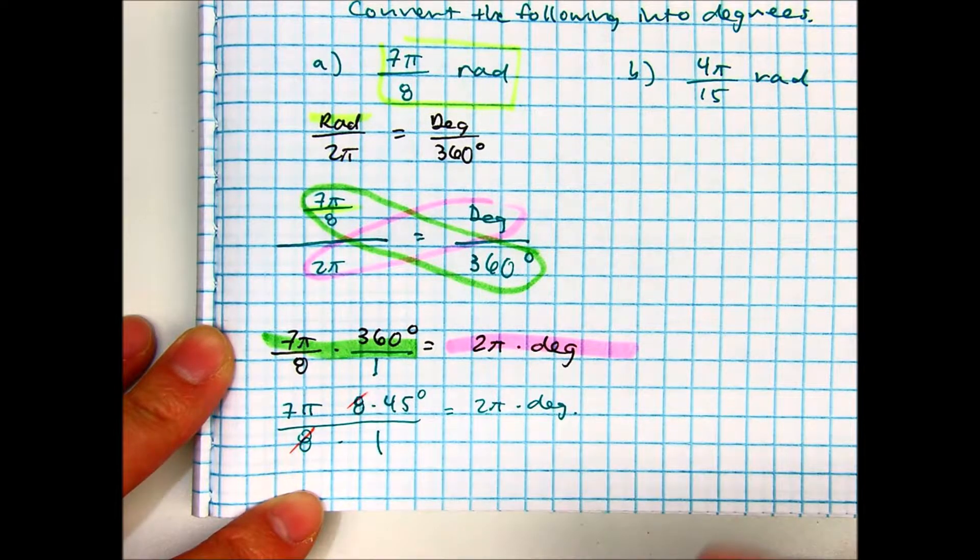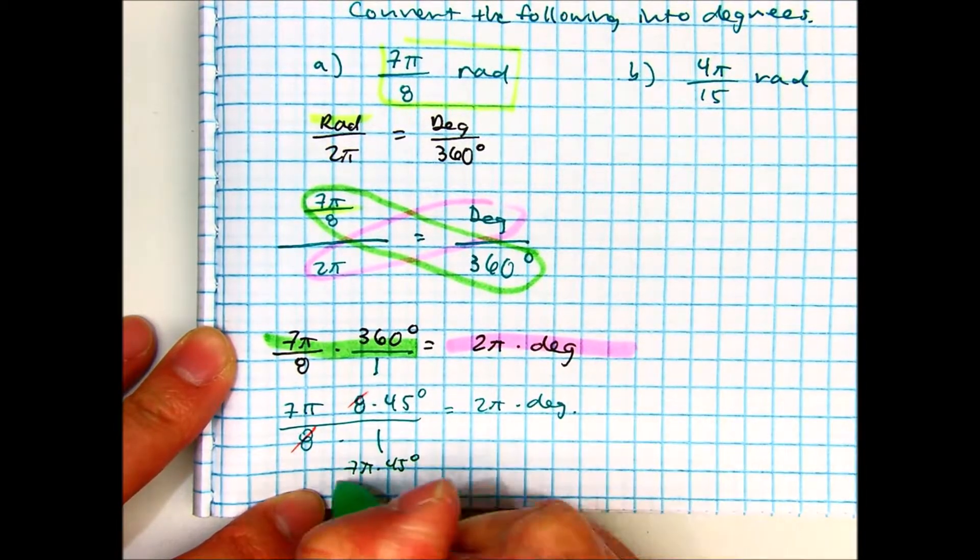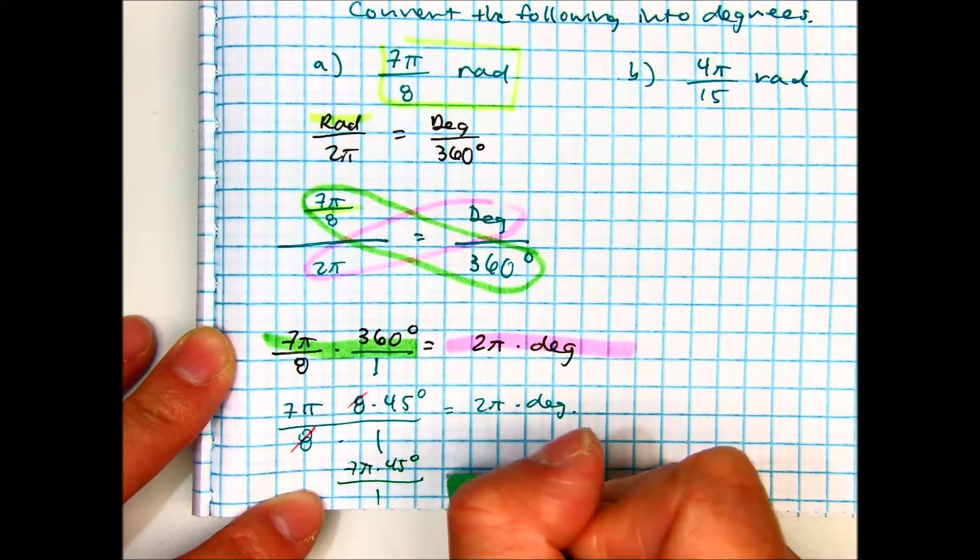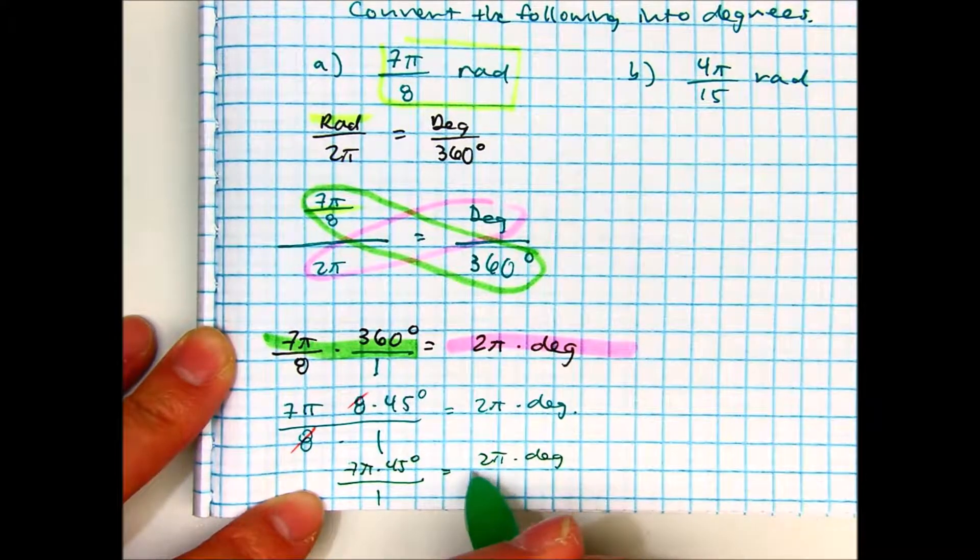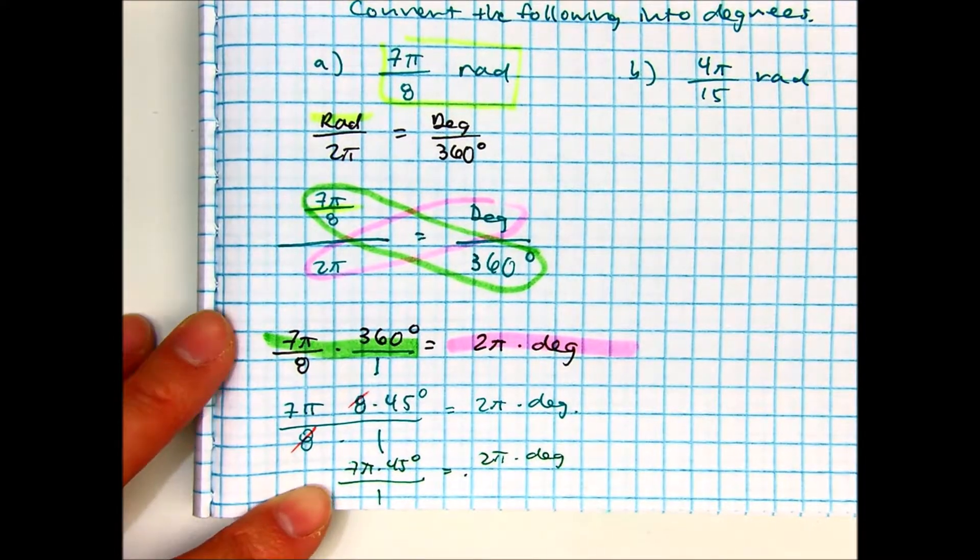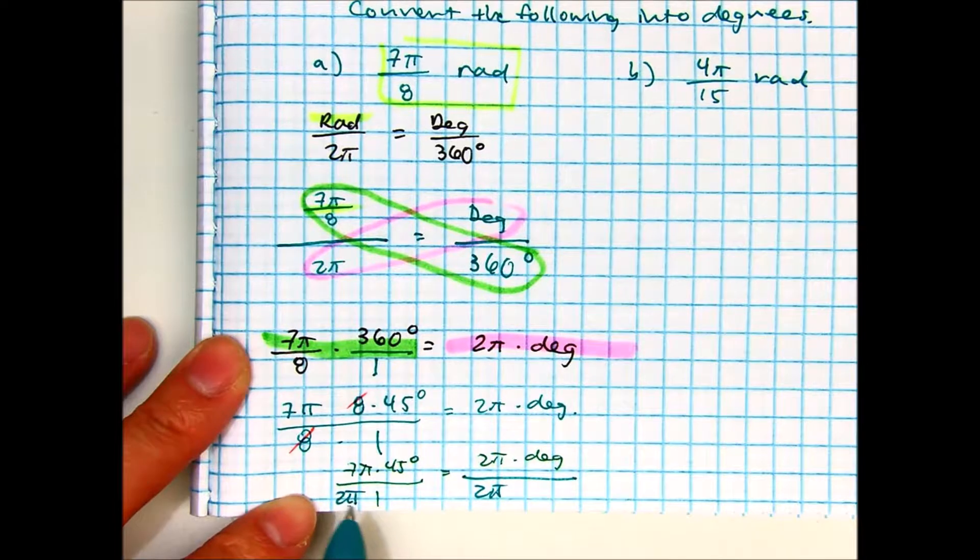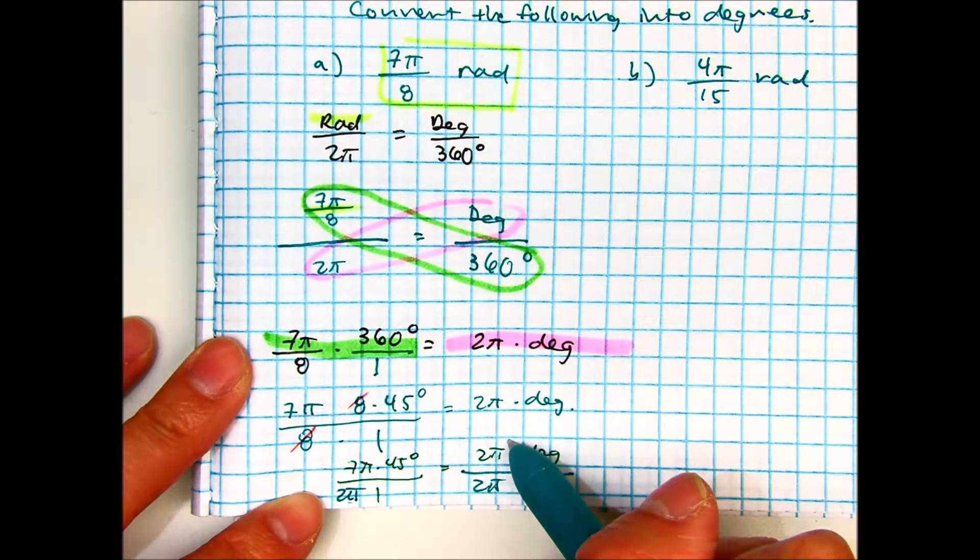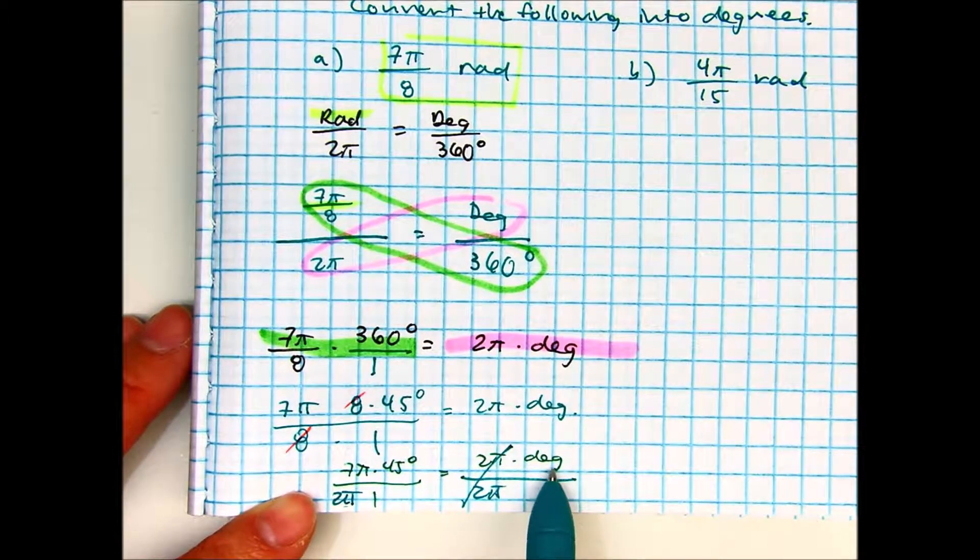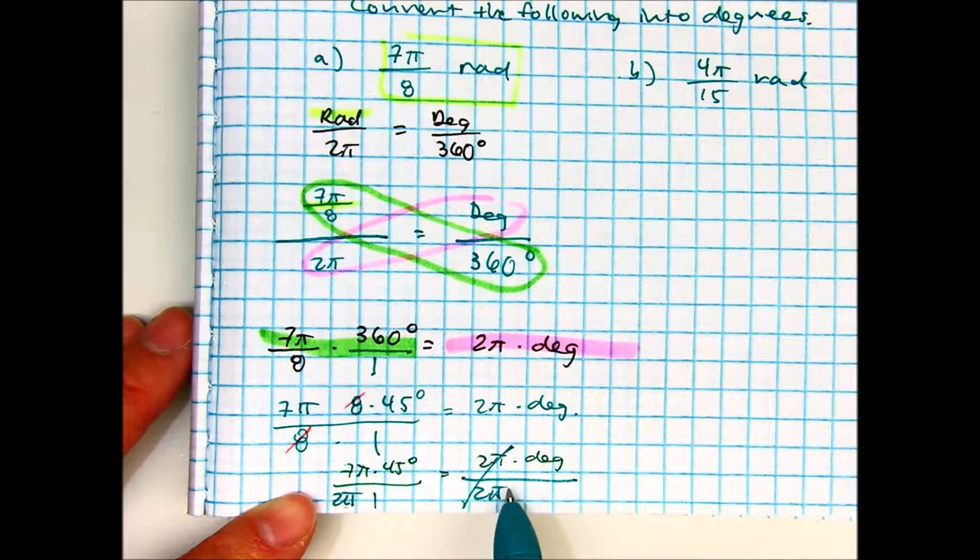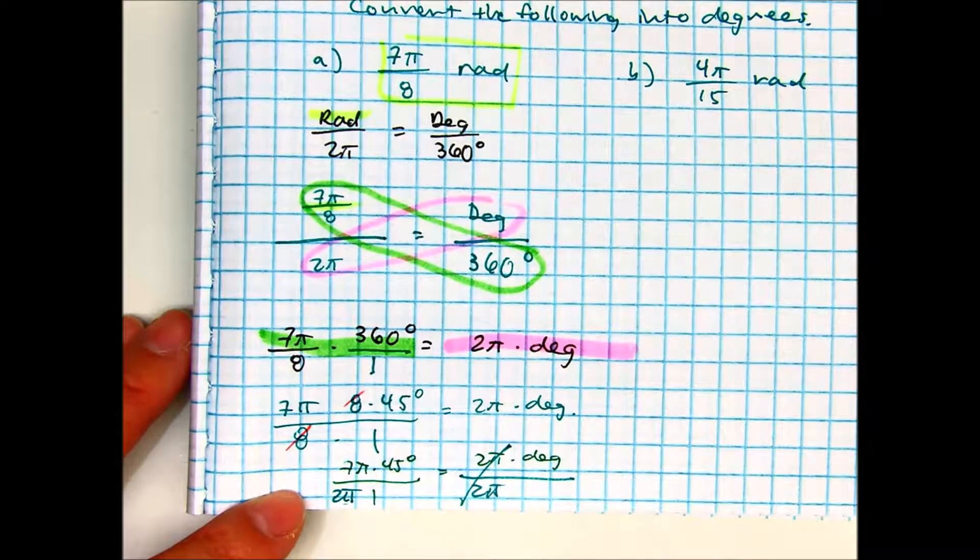So, then I'm left with 7π times 45 degrees over 1, equals 2π times degrees. So, now I can divide both sides by 2π. Dividing both sides by 2π means that 2π is in the denominator. Over here, this will cancel. Okay, this is how you know you're doing it correctly. Class, does degrees have π in it? No, radians does. Does that make sense? So, you know on this side that they will what? They'll cancel.